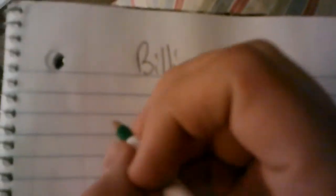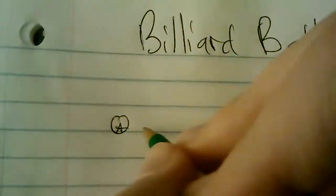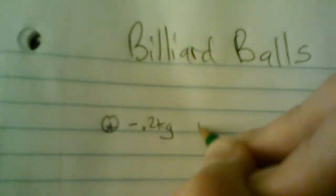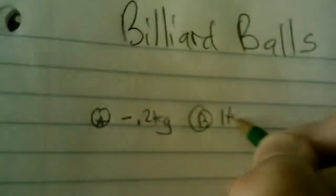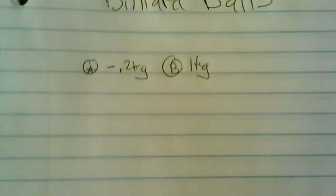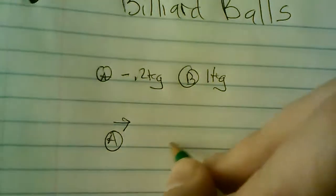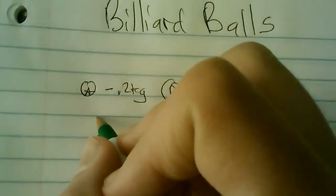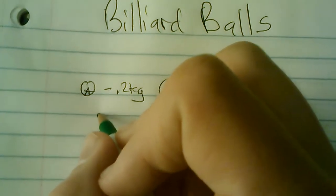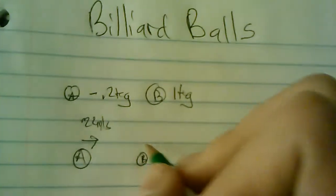So I'm going to make up some values for a billiard ball problem, it could be anything, it could be cars, whatever. But I'm going to make up values for mass and velocity. We're going to have ball A that's 0.2 kilograms, and ball B that is 1 kilogram. Ball B is going to be at rest, ball A is going to hit it. Ball A is moving with a velocity of 22 meters per second, so pretty fast. Obviously that's 0 meters per second.